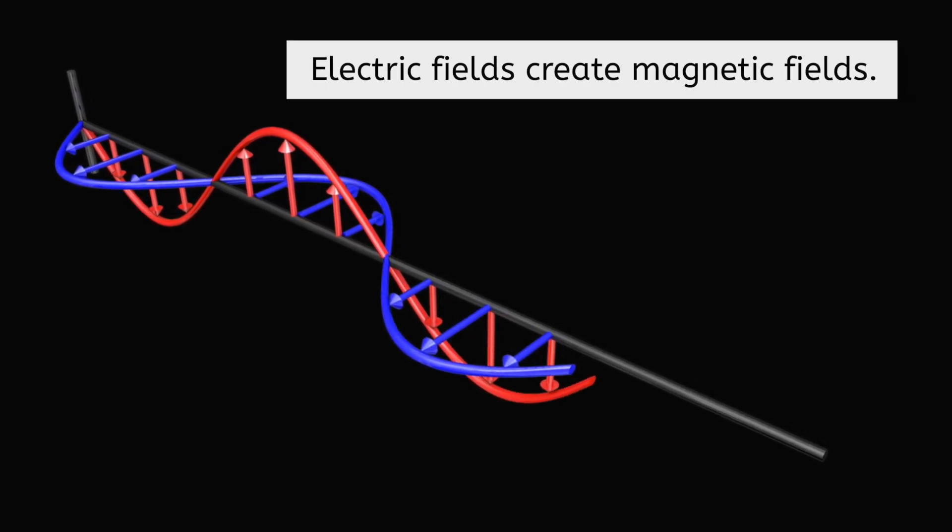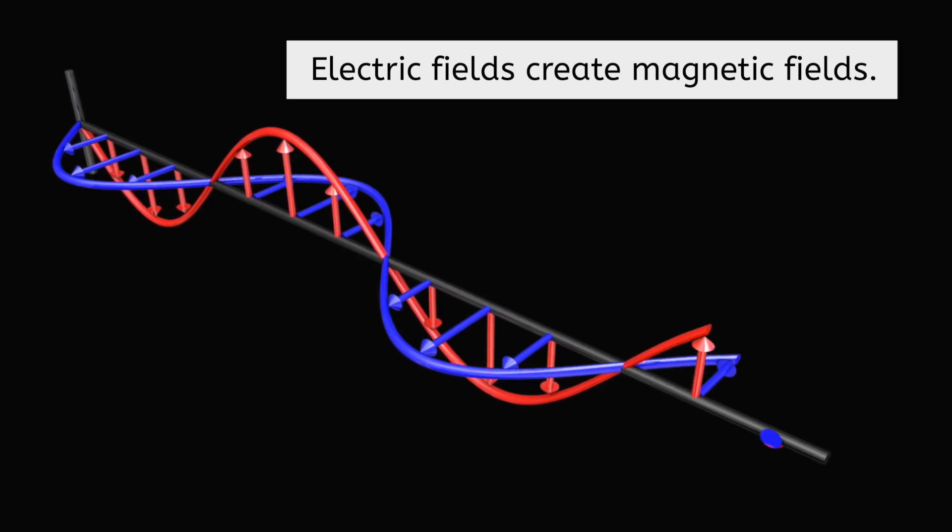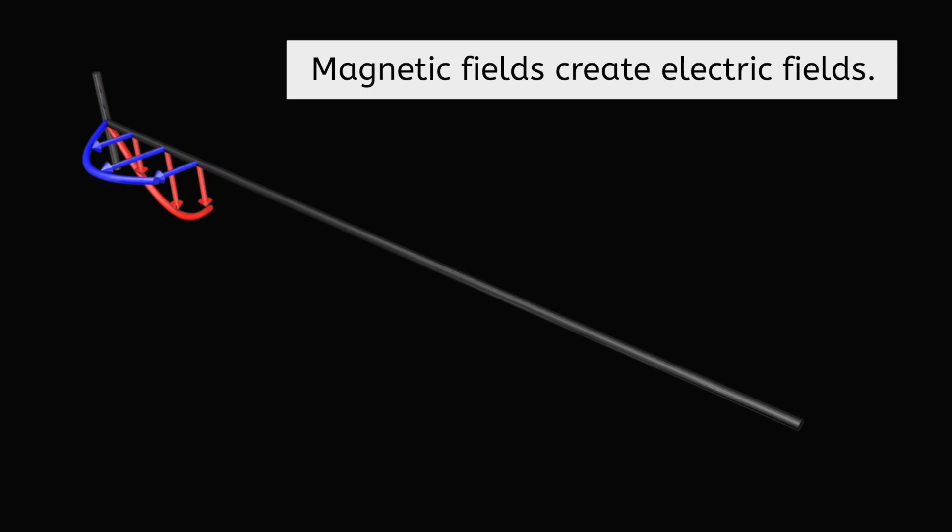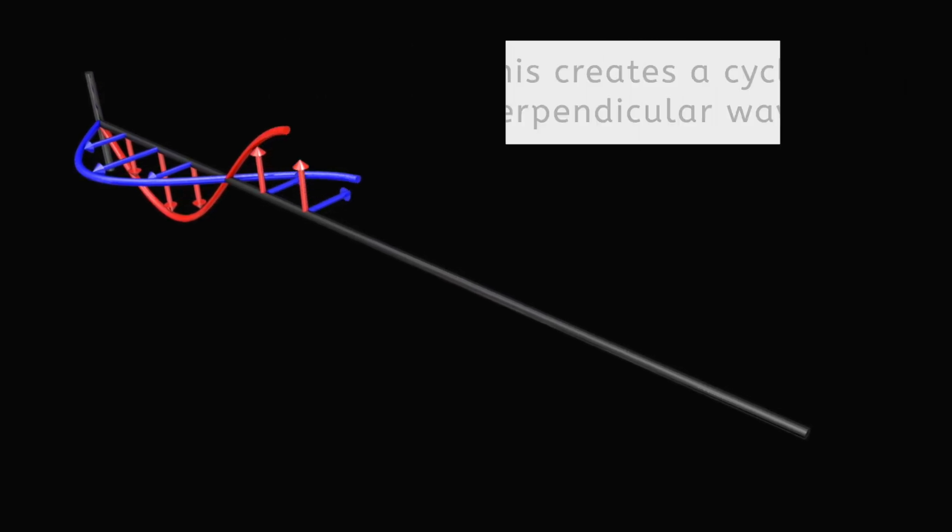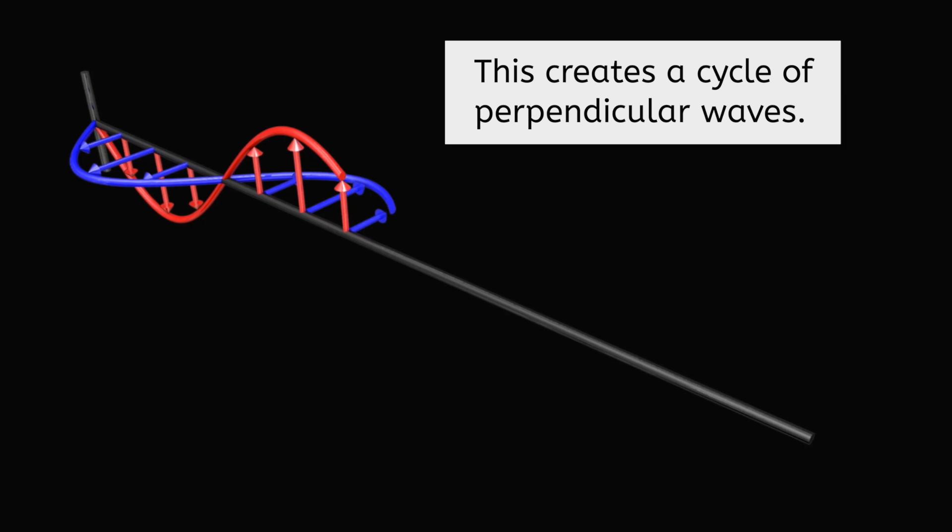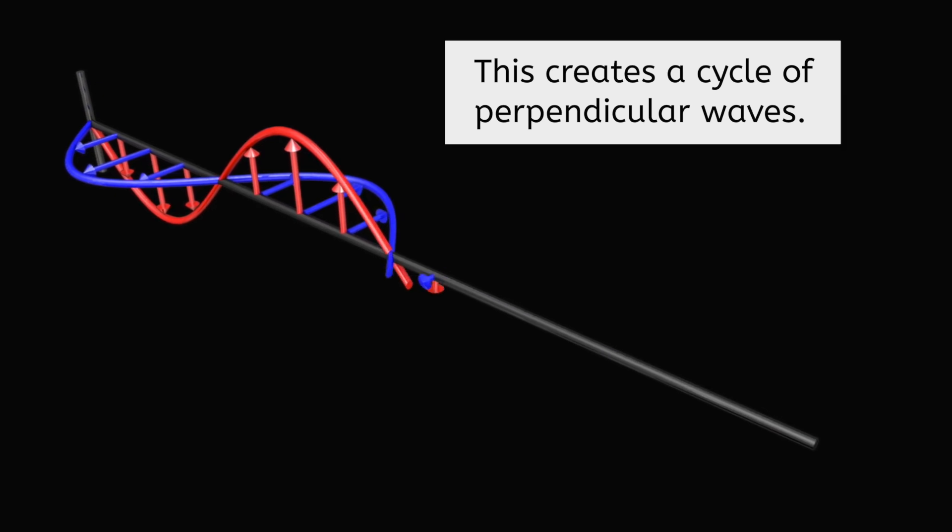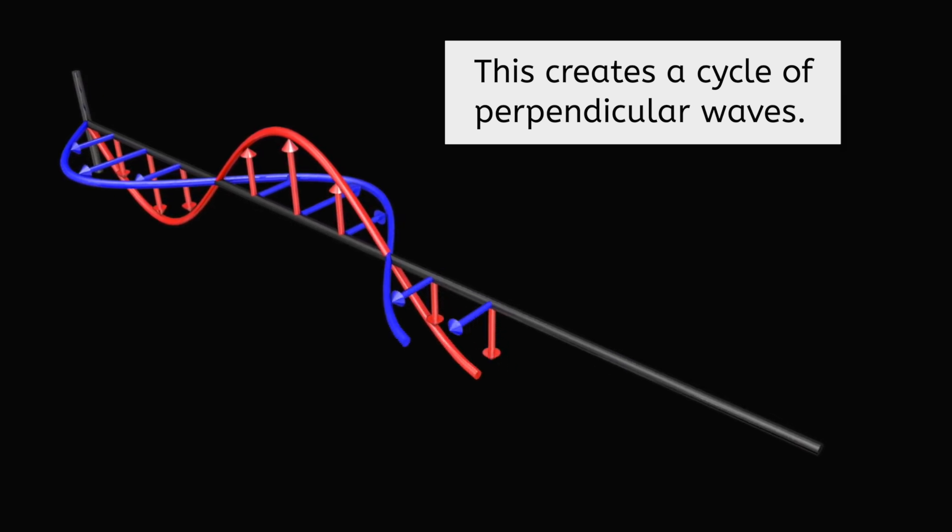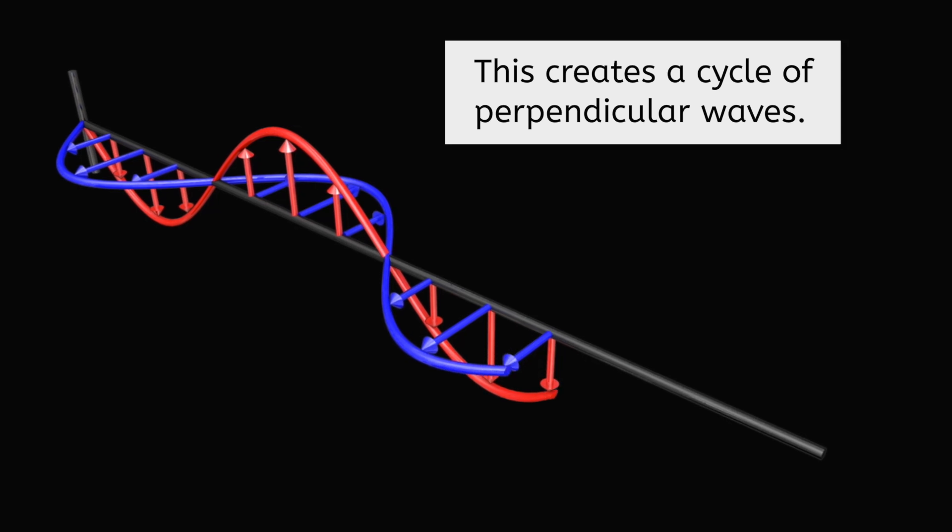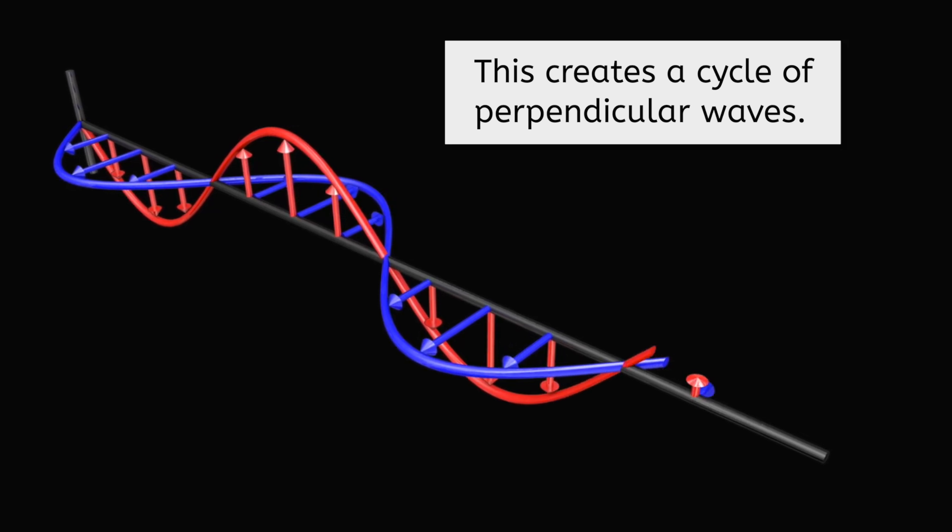But here's the cool part. When the electric field waves shake, they create a magnetic field that shakes too. And this magnetic field then affects the electric field, creating a cycle. These fields are always perpendicular to each other. It's like a dance, with each field taking turns leading and following, creating a wave that travels through space.